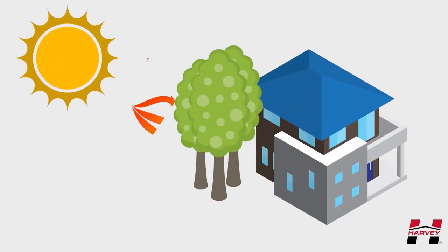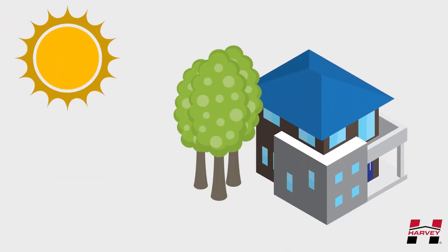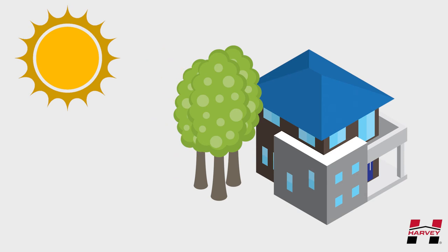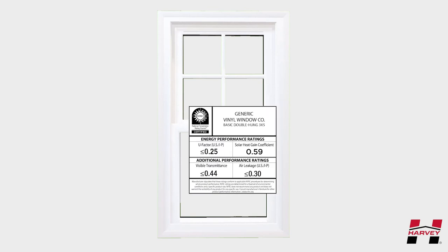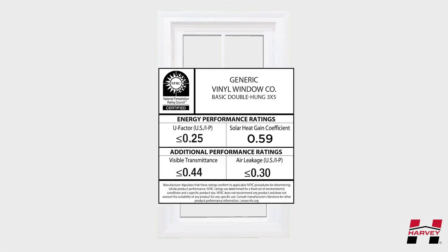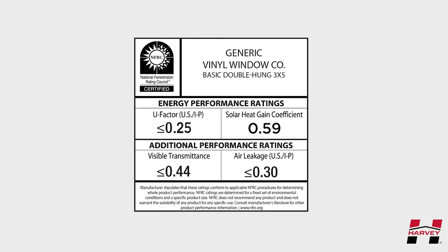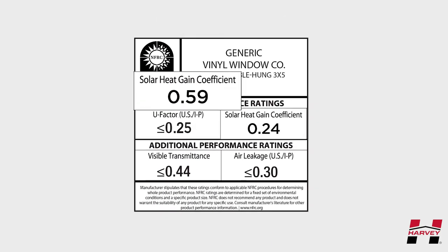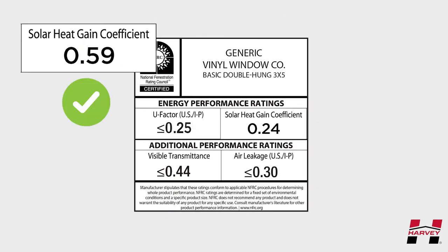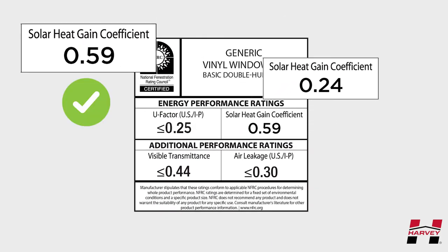Shaded areas around the home should also be considered. Shaded areas limit the available radiant heat, so you will want to adjust accordingly. The NFRC specifically calls out solar heat gain coefficient numbers on each window's label.